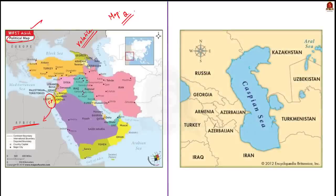Let us start with the Caspian Sea. The Caspian Sea is bordered by countries like Russia, Kazakhstan, Turkmenistan, Iran, and Azerbaijan. Europe's longest river, the Volga, drains into the Caspian Sea at its northern end.